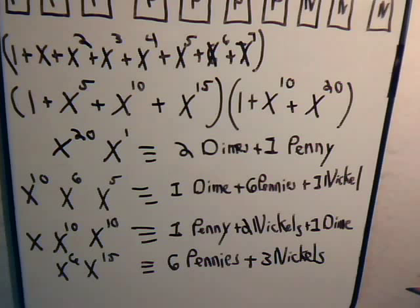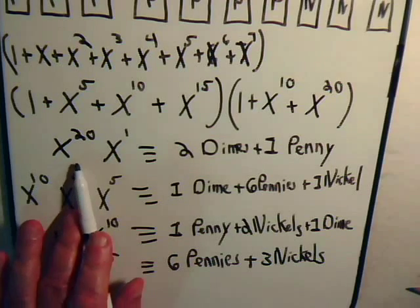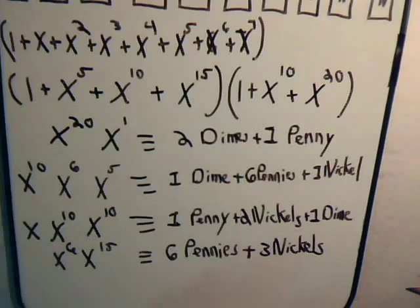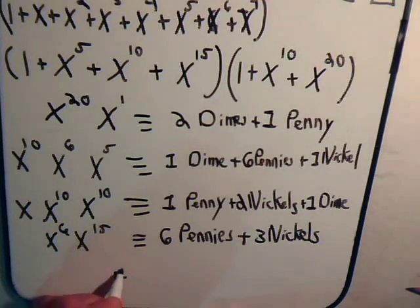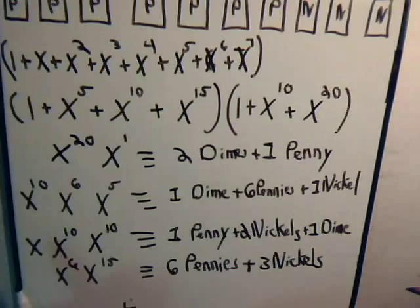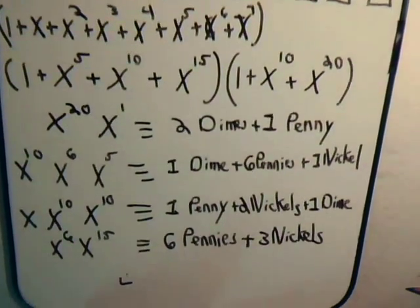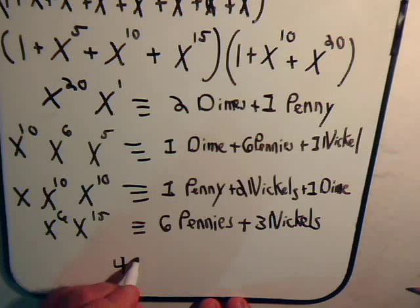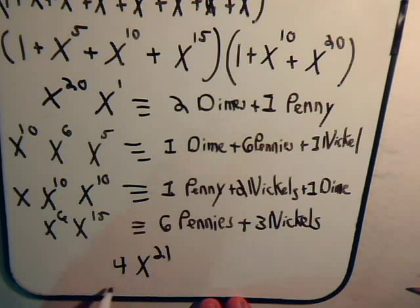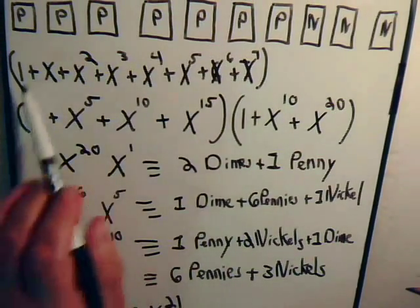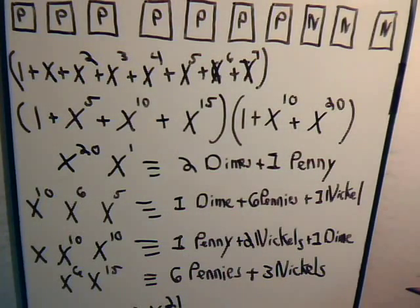So you see there are one, two, three, four ways that we generated x to the 21. So when we multiply all this out, this times this times this, the coefficient of x to the 21 would be four.